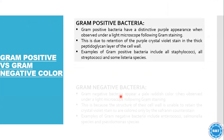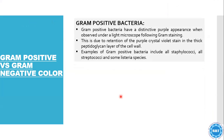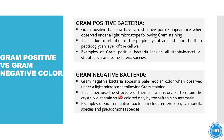Gram-positive bacteria have a distinctive purple appearance when observed under a light microscope following the gram stain. This is due to the retention of the purple crystal violet stain in the thick peptidoglycan layer of the cell wall. Examples of gram-positive bacteria include Staphylococcus and Staphylococci species. Gram-negative bacteria have a pale reddish color when observed under a light microscope using gram stain, because the structure of their cell wall is unable to retain the crystal violet stain, so they are colored only by the safranine counterstain.